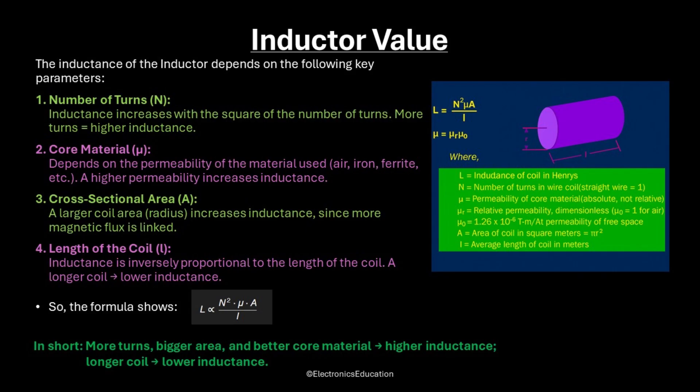4. Length of the coil — inductance is inversely proportional to the length of the coil; a longer coil means lower inductance. So the formula shows that L is proportional to the square of turns, permeability of the core, and the cross-sectional area of the coil, and inversely proportional to the length of the coil. In short: more turns, bigger area, and better core material leads to higher inductance, and a longer coil leads to lower inductance.